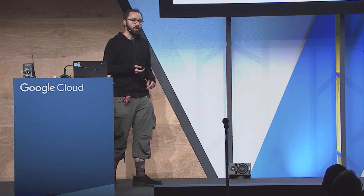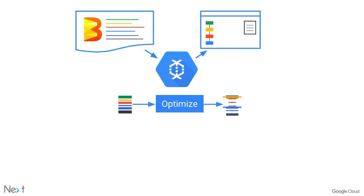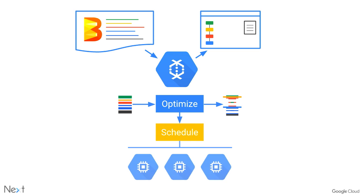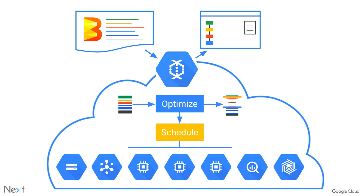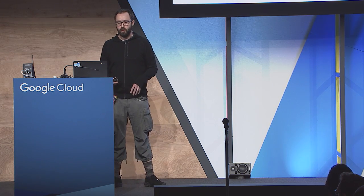You've written your Beam pipeline, you hand it off to us in Cloud Dataflow, and we run it through our optimizer that comes up with the best way to run it, schedules machines, brings up VMs, and integrates cleanly with all the various portions of Google Cloud. All of this is done within the managed service where you don't have to do any ops work to keep it all up and running.